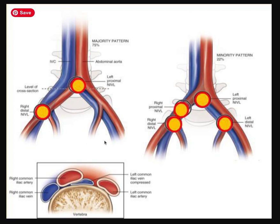Before we get to the CT scans, this view we're looking at is called a coronal view, similar to one of the CT views. This view down here is a cross-sectional or axial view. The axial view shows more clearly this compression happening between the artery and the vertebra of the left common iliac vein — you can see it gets flattened like a pancake, just after the IVC splits.